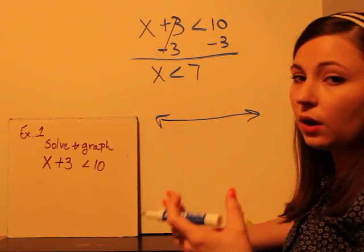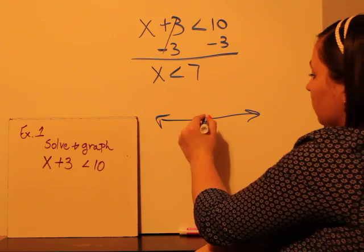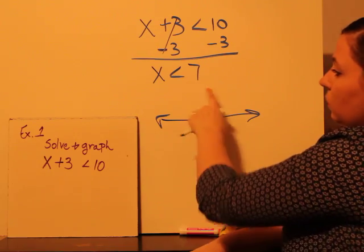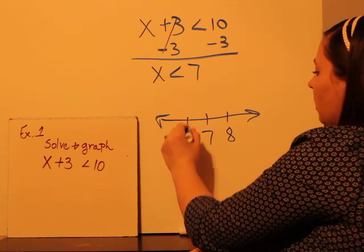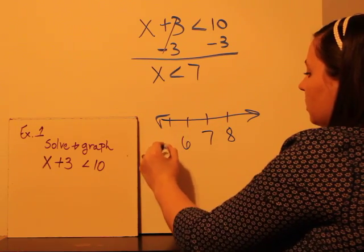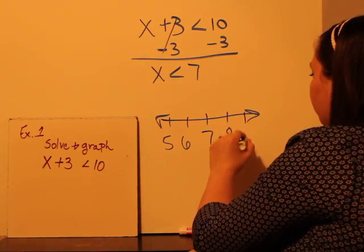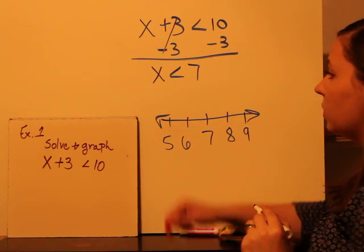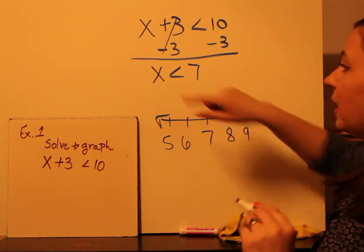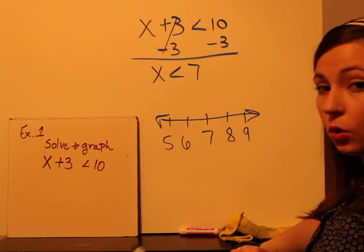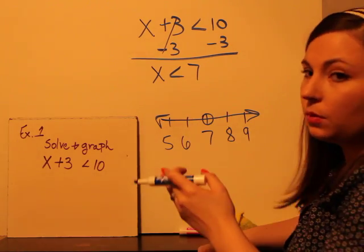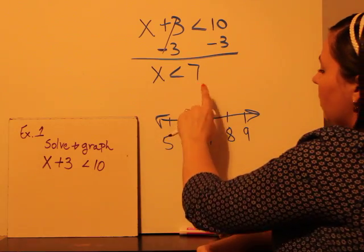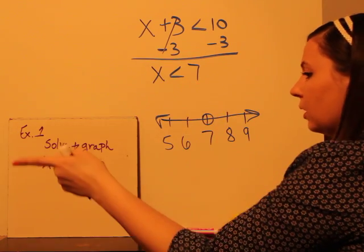And in our graphing video, as I said, just start in the middle. Now we got 7 and do a couple numbers on either side just to flesh it out a little bit there. So now this is x is less than, so it's going to be an open circle because it can't be equal to 7, but that's where we have to start at. And less than, that means to the left.